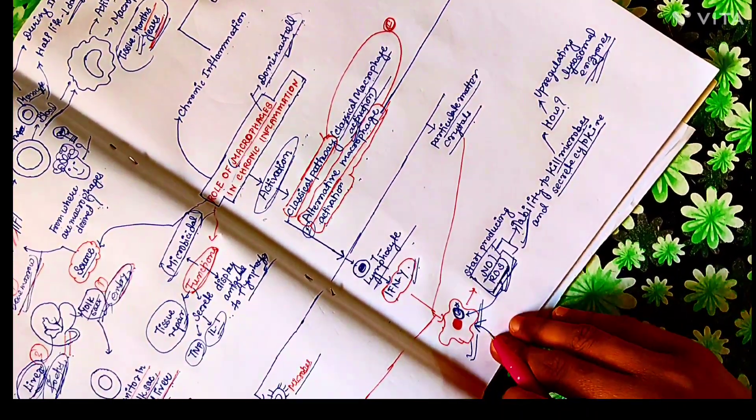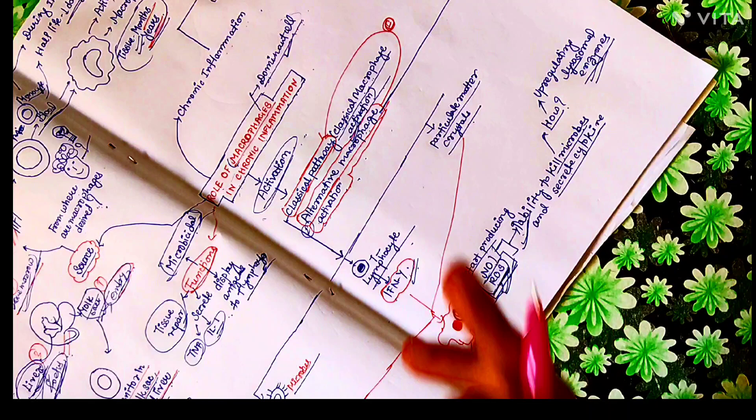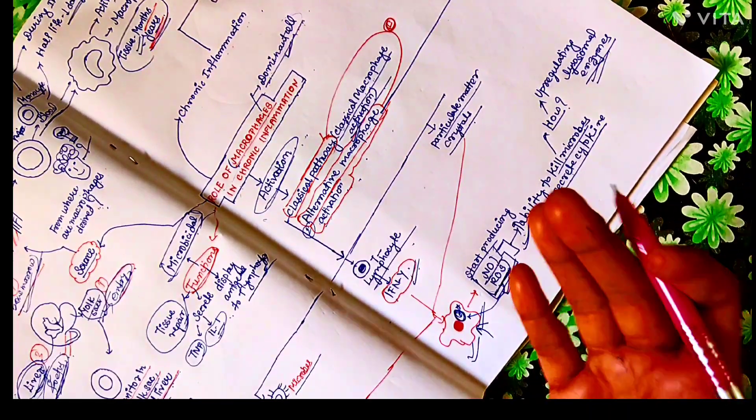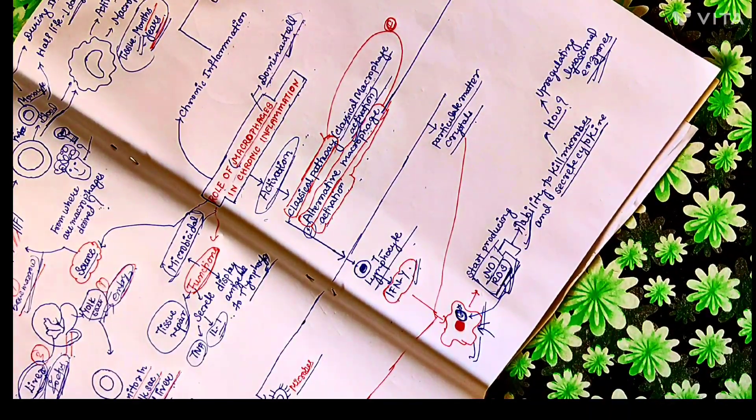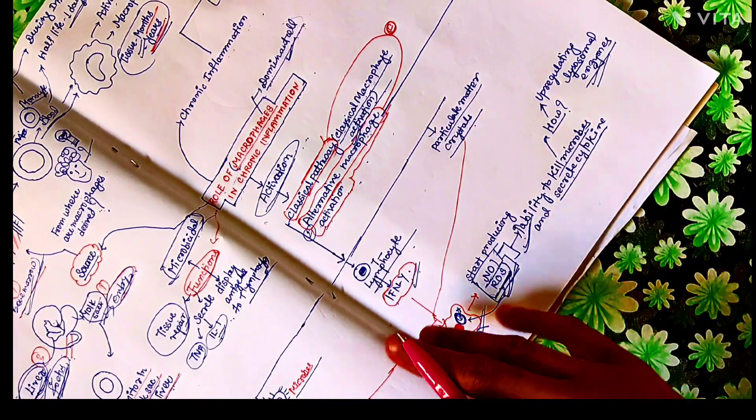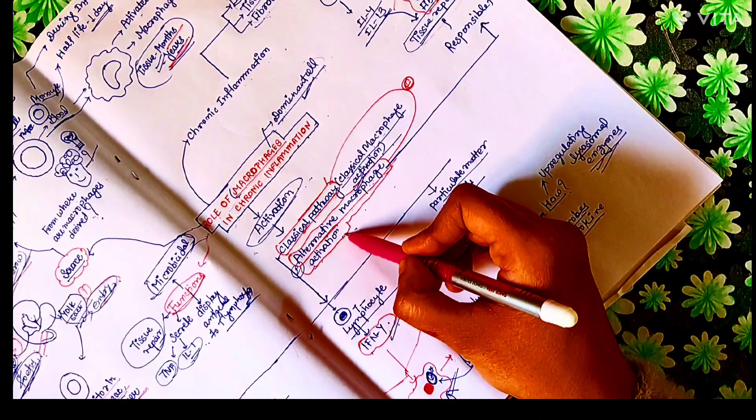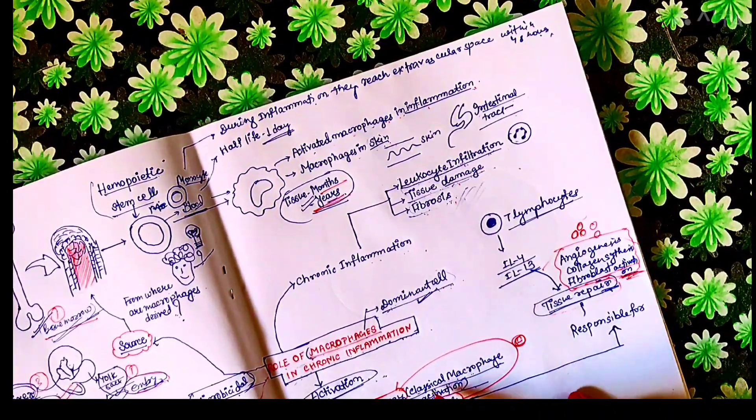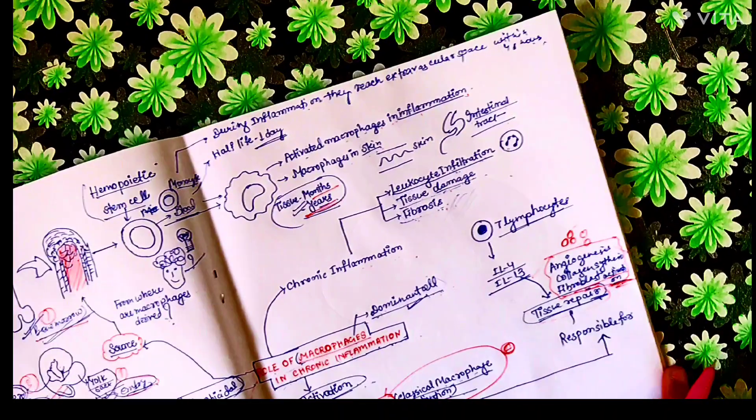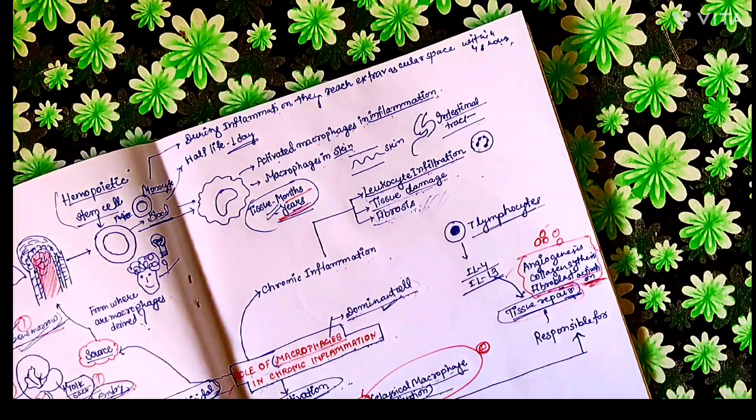First, this classical macrophage activation pathway is initiated and later on alternative macrophage activation pathway is initiated. So now we will discuss about the alternative macrophage activation pathway. This alternative macrophage activation pathway inhibits the classical macrophage activation pathway.